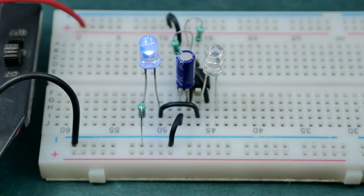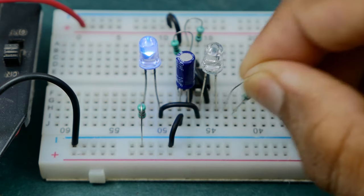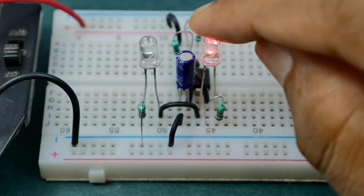This circuit is also capable of alternatively flashing two LEDs one after the other by just connecting an extra LED in opposite polarity to the output pin of 555 IC.